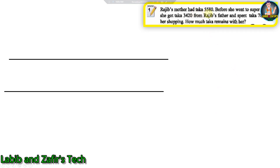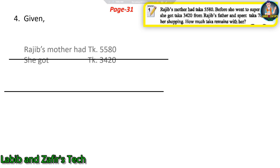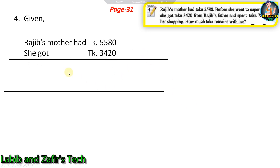Next word problem: Rajiv's mother had taka 5,580 before she went to the supermarket. She got taka 3,420 from Rajiv's father and spent taka 7,830 for her shopping. How much taka remains with her? At first, Rajiv's mother had taka 5,580 and she got taka 3,420, so we add these together.